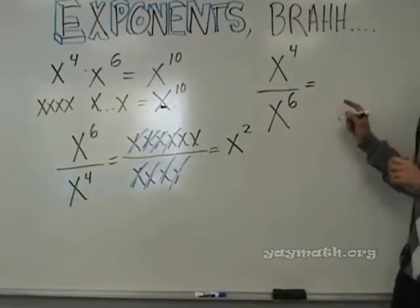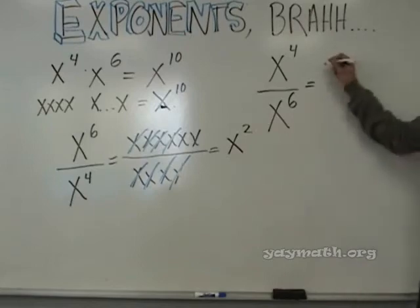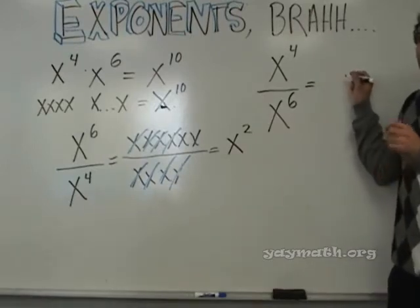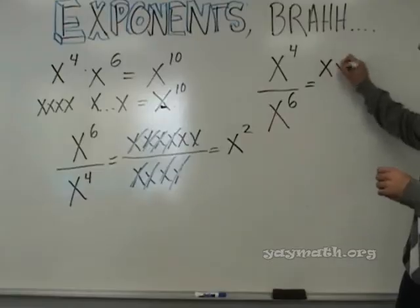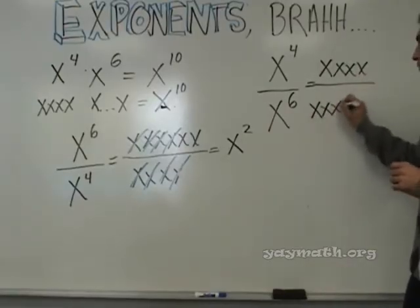Let's do the cancellation technique. If we're going to do the cancellation, how many x's shall we write on the top? Four. Good. How many x's shall we write here? One, two, three, four, five, six.